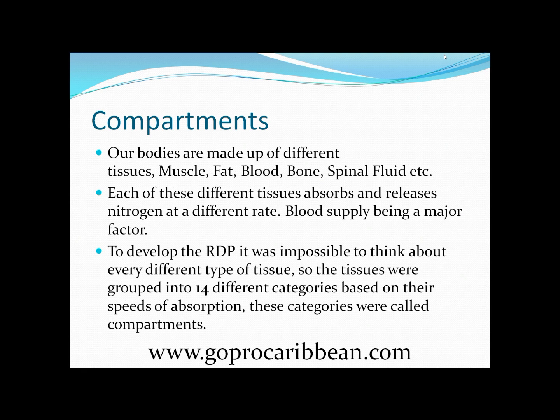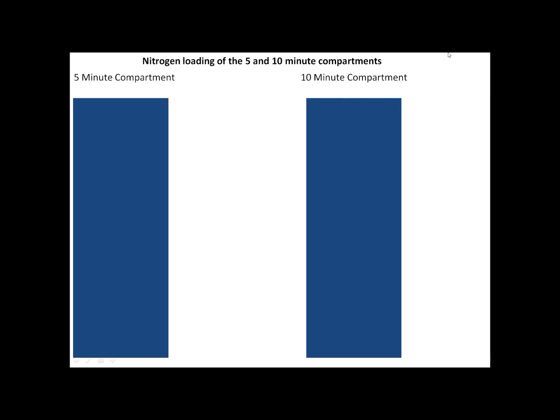Different types of diving might require a different number of compartments, or compartments with different half times. These columns — which you should be familiar with if you've watched my video on half times — now represent something a little different. In the previous video the columns represented different dive depths, whereas now we're going to use them to represent different compartments with different half times. On the left we have a compartment with a half time of 5 minutes; on the right, a compartment with a half time of 10 minutes. Watching how these fill with nitrogen on a dive, the 5-minute compartment absorbs more nitrogen more quickly. After 5 minutes it would have absorbed half the total amount of nitrogen.